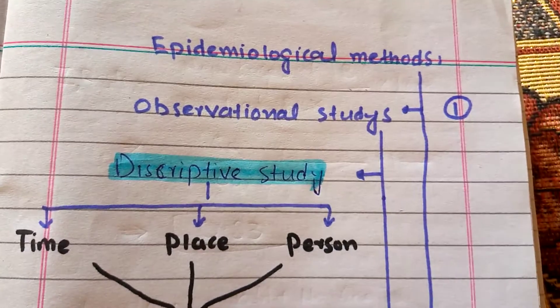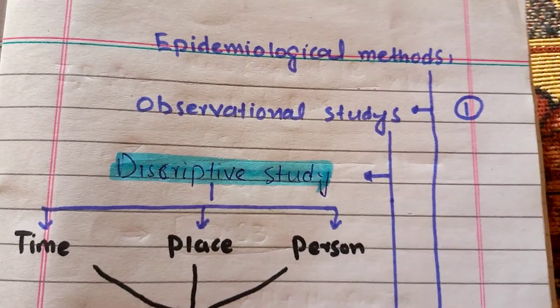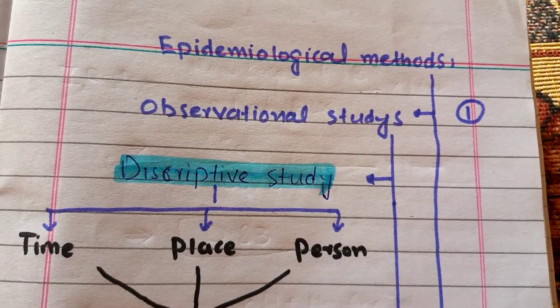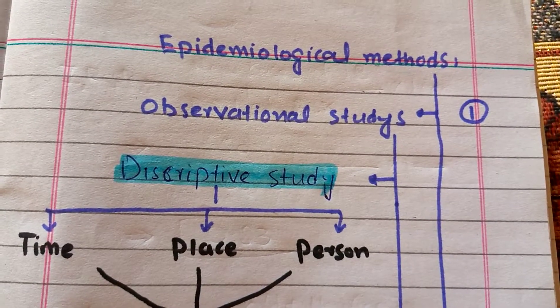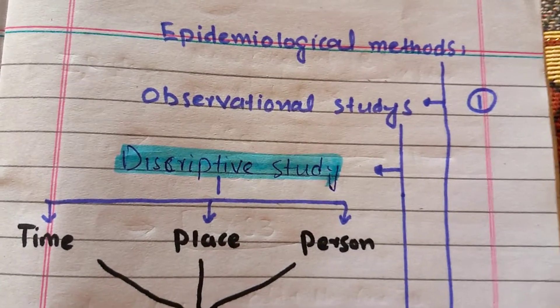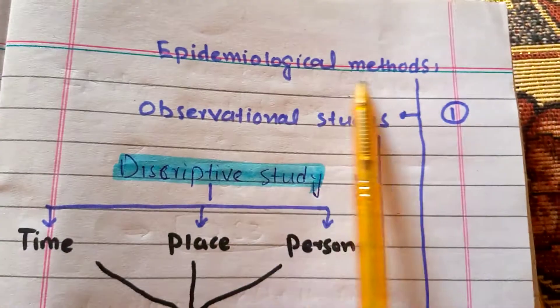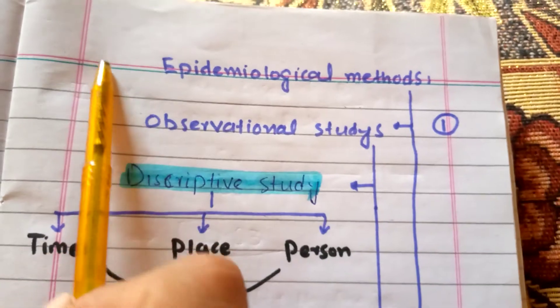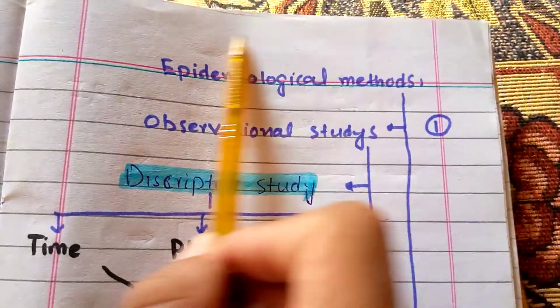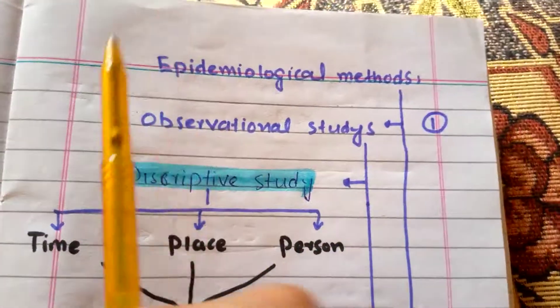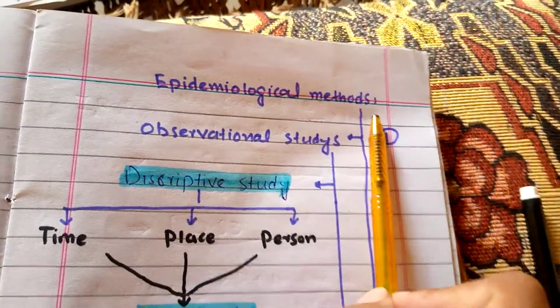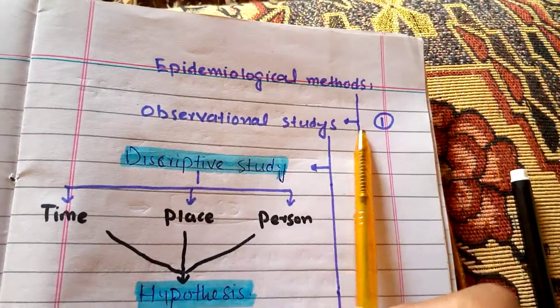Today's video is about epidemiological methods and we will show the different epidemiological methods. Whenever a disease occurs in a community, we study the relationship between the disease and environmental and risk factors through epidemiological methods. There are two main methods.